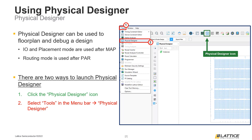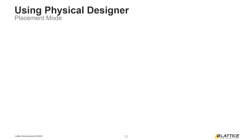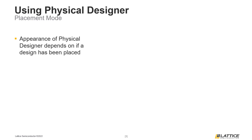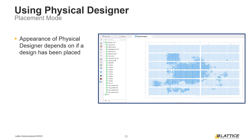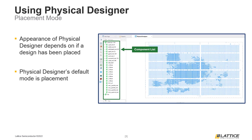Both of these methods work exactly the same and will open the Physical Designer Tool in another window of the Radiant workspace. If a project has been placed and routed, Physical Designer will look like the figure on the slide when it is opened. If Physical Designer is launched before place and route, then the cells in the Physical Designer window will not be populated, since they have not already been placed. This default view of Physical Designer is its placement mode, which contains a preview of the various sites in a design and can be used to view how a design was placed. On the side of the window are the list of components in the design. Selecting a component from this list will highlight the location of the component in the main section of the Physical Designer window.